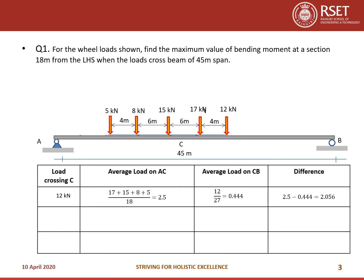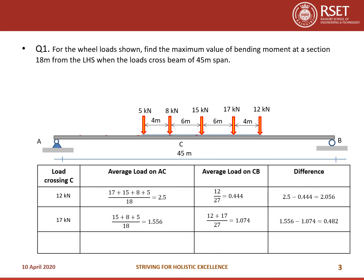In the second case, the load 17 kN is also crossing section C. The average load on AC is 15 plus 8 plus 5 divided by 18, giving 1.556. The average load on CB is 12 plus 17 divided by 27, which is 1.07. The difference is 0.482.